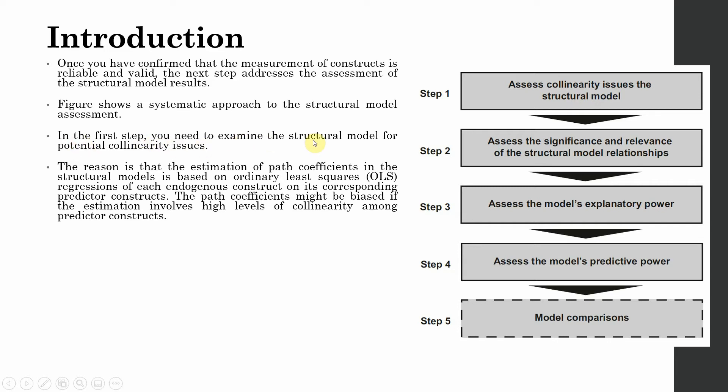In the first step, you need to examine the structural model for potential collinearity issues. The reason is that path coefficients in the structural model are based on ordinary least squares (OLS) regression of each endogenous construct on its corresponding predictor constructs. The path coefficients might be biased if the estimation involves high levels of collinearity among predictor constructs. If there is high collinearity, then your path coefficients may be biased, so you should assess the collinearity of your constructs.